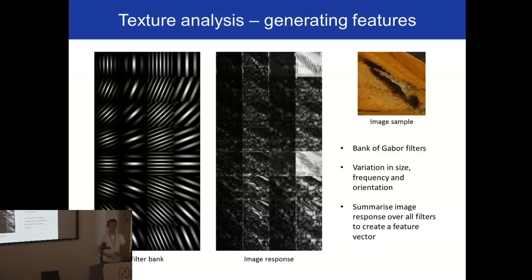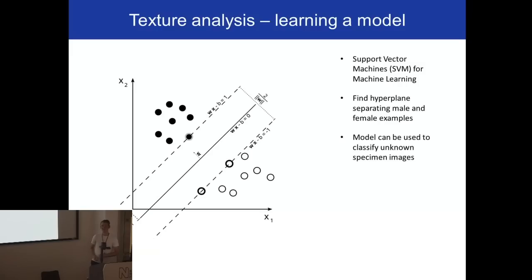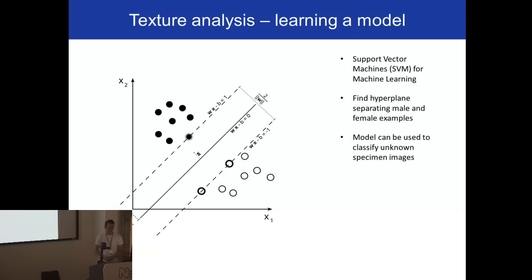From this we get a feature vector, which is basically just a description. When you've got descriptions for all these images, you want a way to separate them: some describe where the gland is, some describe where it isn't. In a 2D example, the glands might be filled circles and non-glands the empty ones — the idea is to find a line that goes straight between them, so if you had a new example, you could check which side of the line it's on, and that tells you if it's a gland or not. We're actually in 32-dimensional space, but the principle is exactly the same. This is called a support vector machine, and again it's all available in the libraries.